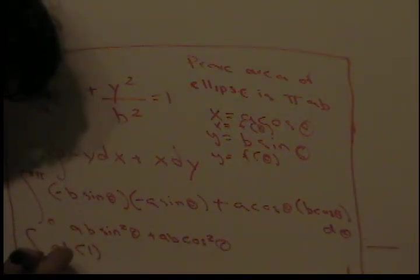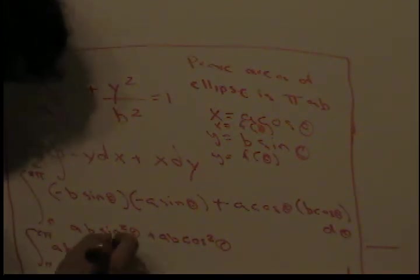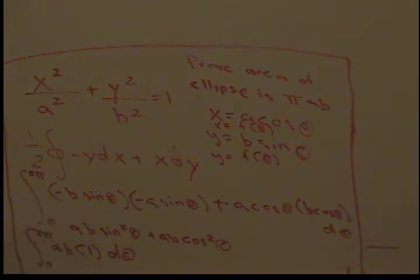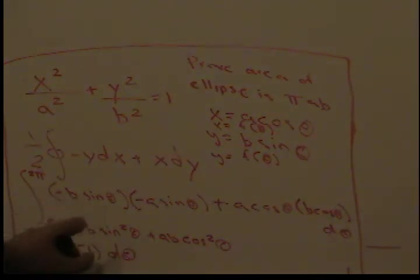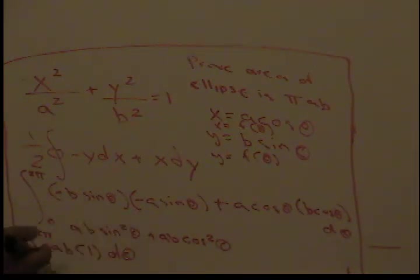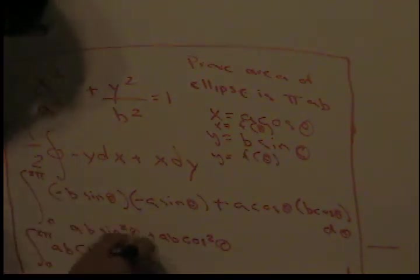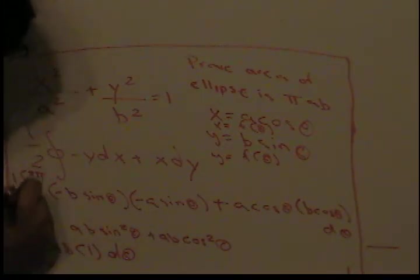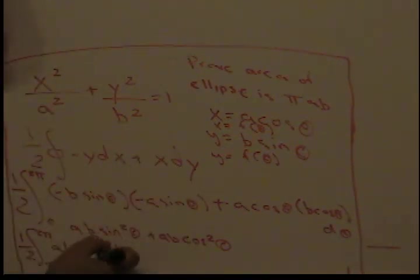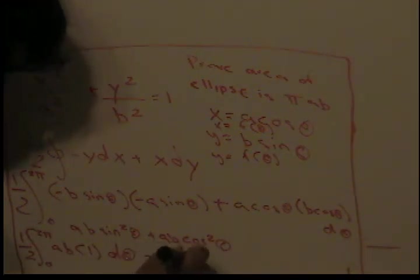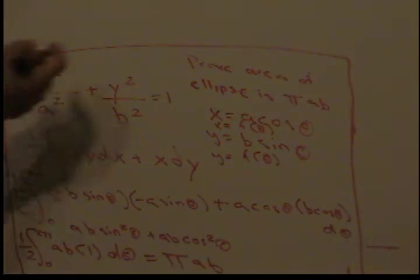So at the end we have this integral from zero to 2π of ab*1*dθ. ab is just a constant. When we integrate this elementary integral - oh I'm sorry, I forgot the one half. Make sure you don't forget this one half from the original formula. When we integrate this we get π*a*b.